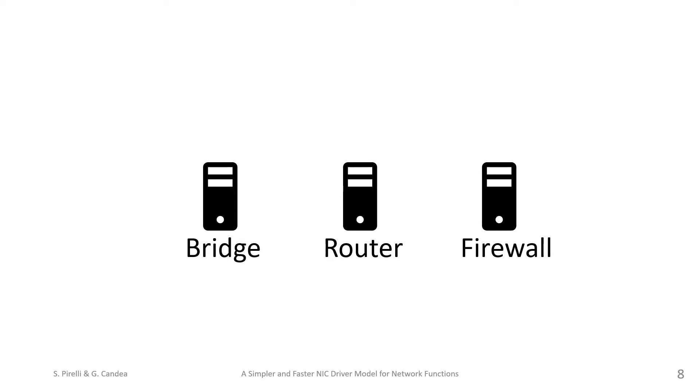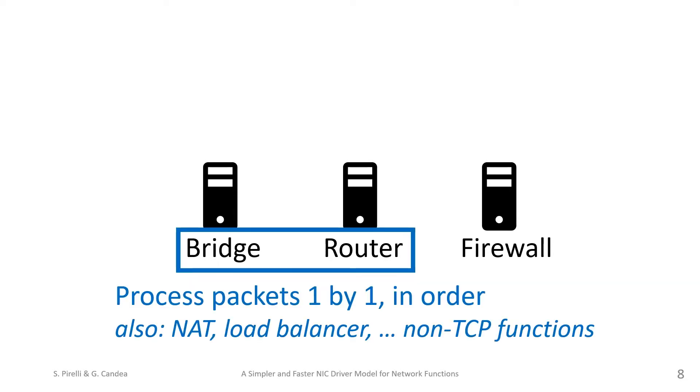Our key insight is that core network functions, such as Ethernet bridges and IP routers, operate in a restricted way. They process packets one by one without reordering them.